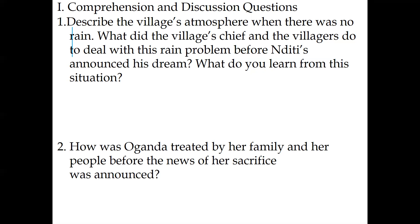Number two: how was Ogonda treated by her family and her people before the news of her sacrifice was announced? You can see on page 28, line 15. The people loved her very much, everyone loved her very much, because she is a lovely daughter of Labo O, a village chief's daughter.